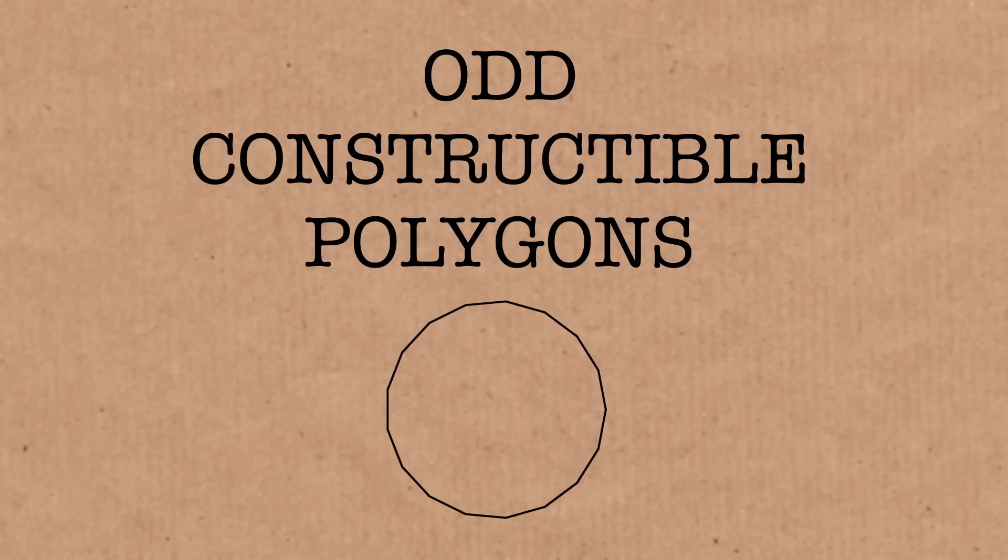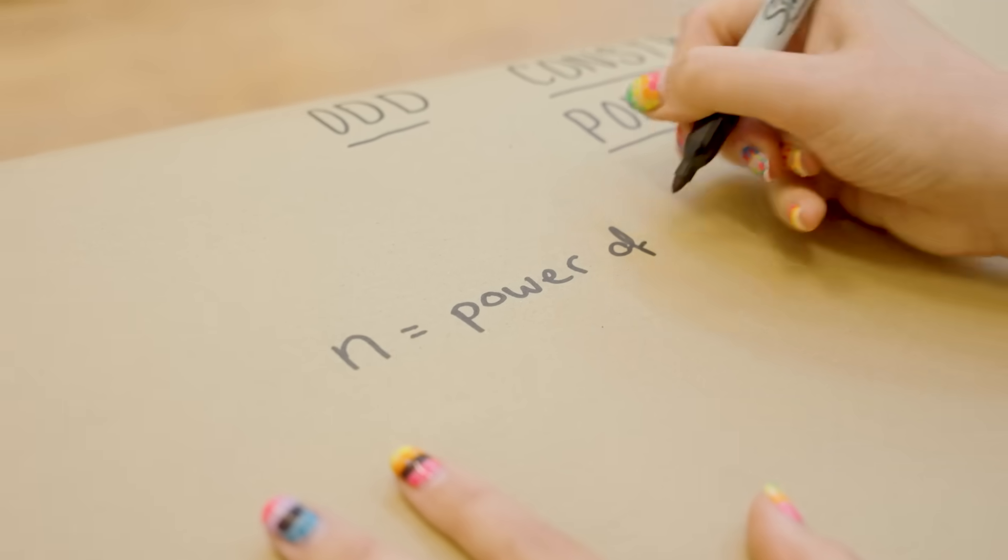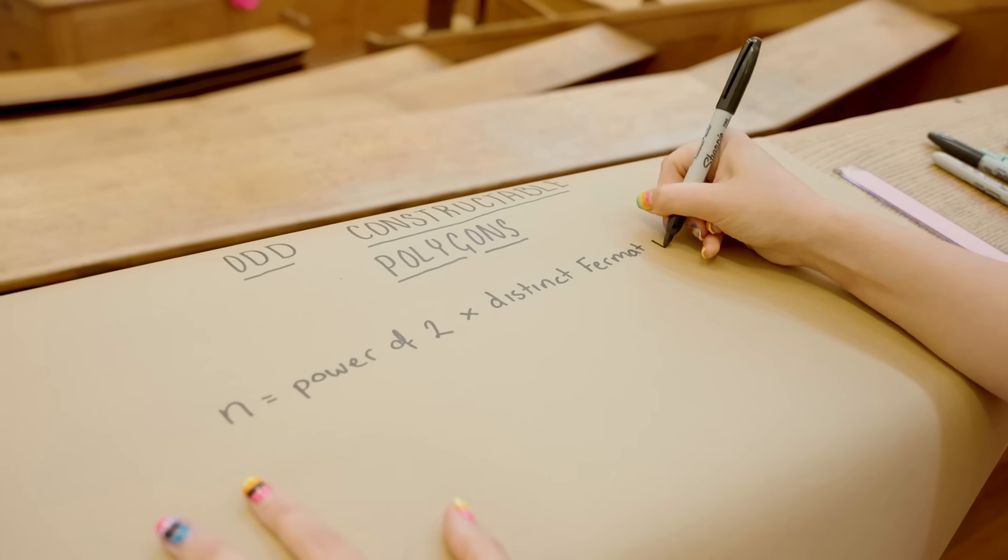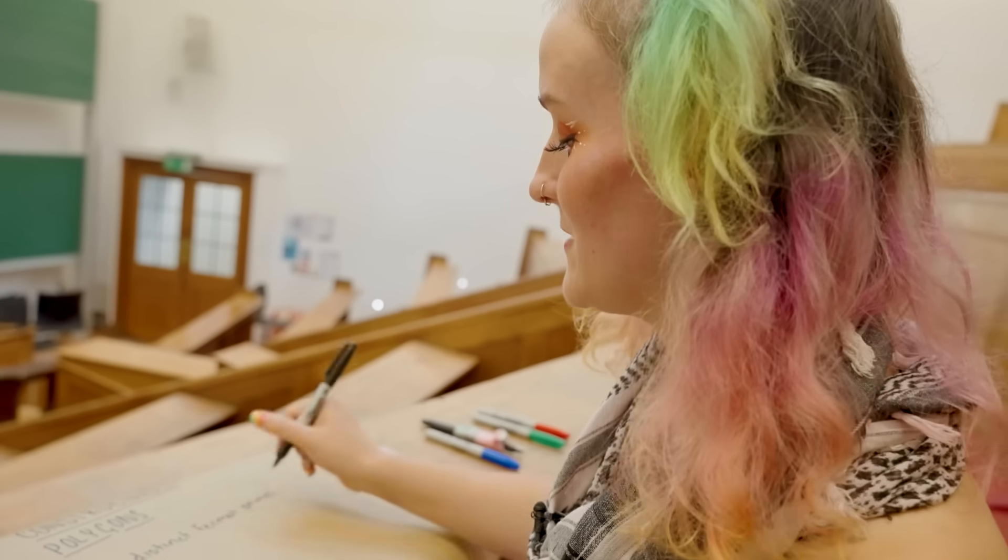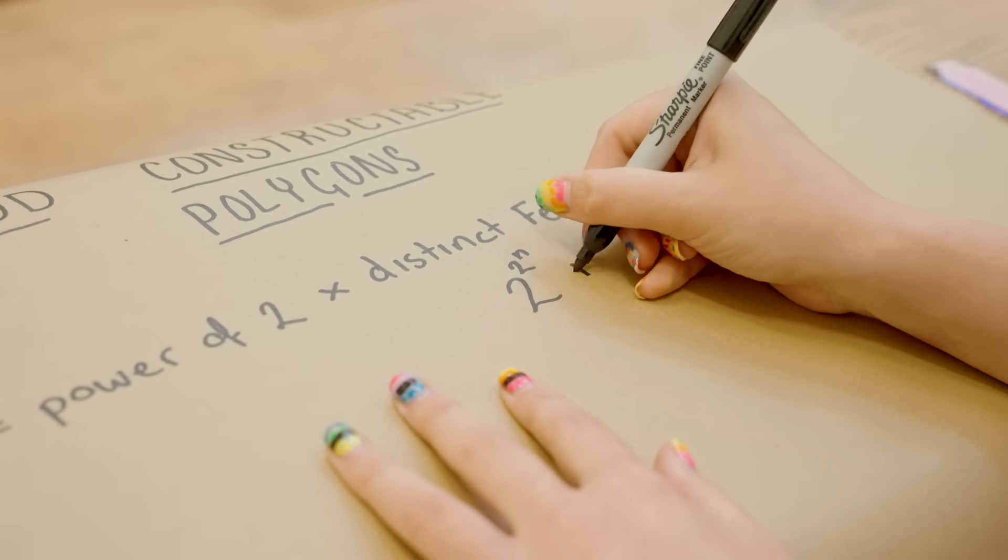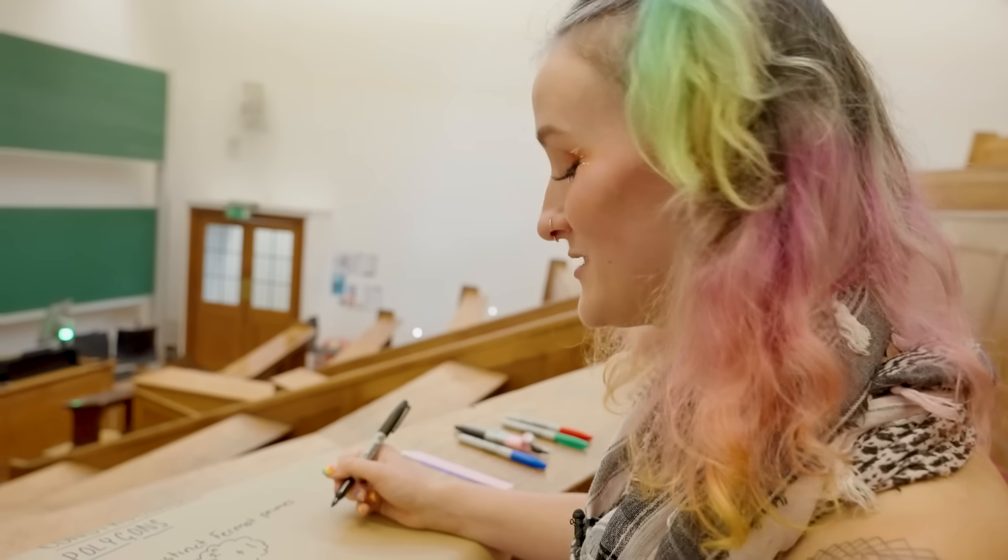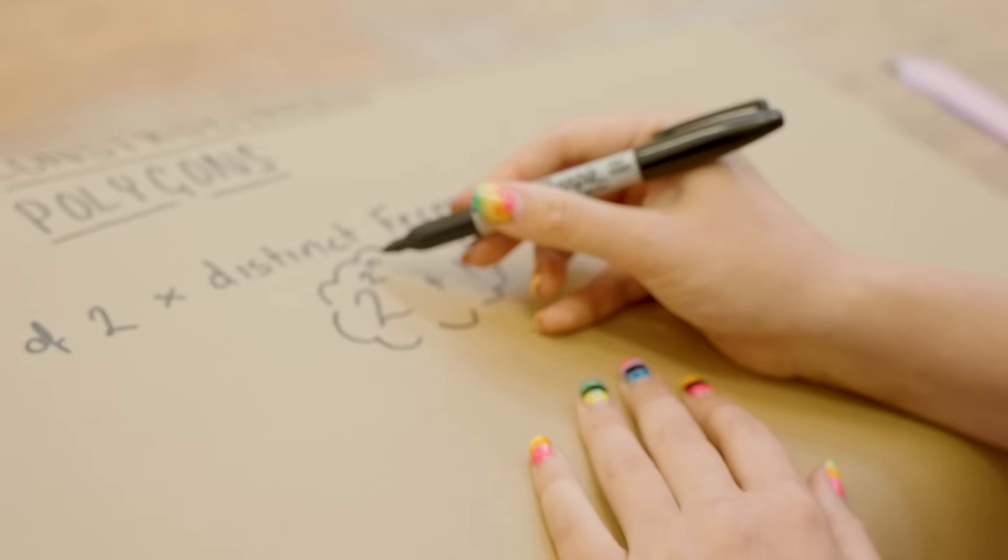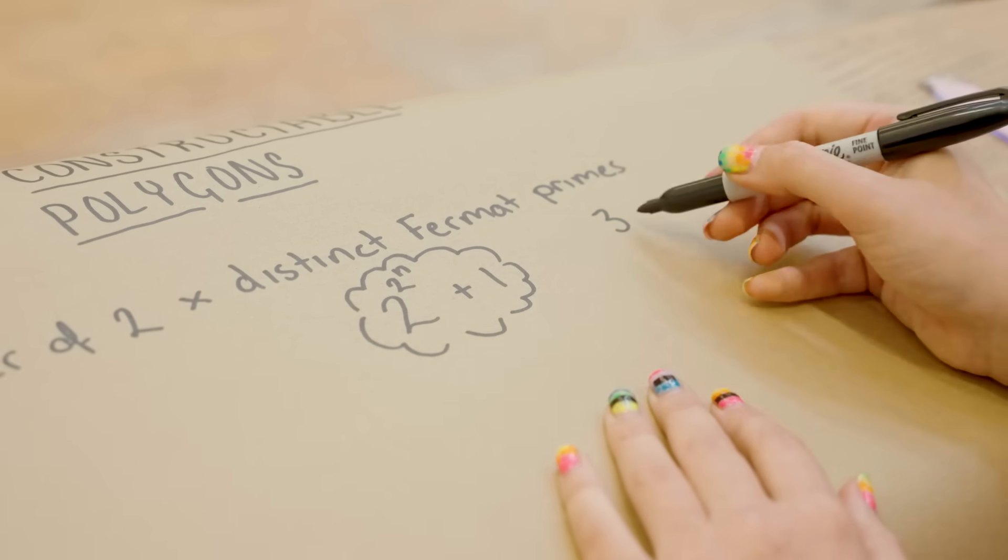How do you get an odd constructible polygon? So, the number of sides, n, needs to be equal to some sort of power of two, multiplied by any number of distinct Fermat primes. Now, to be a Fermat prime, it needs to be in the form two to the power of two to the power of n plus one. That's how you get your Fermat primes. And we only have five of them. So, the five Fermat primes that we have so far are three. So, you can see if you put a zero in here for n, you'd have two to the power of zero is one. Two to the power of one is two. And then plus one gets you the three.